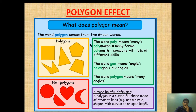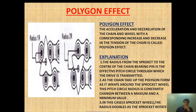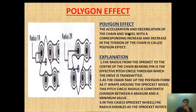So let's begin. What is a polygon? The word polygon means: consider two words — 'poly' means many, 'gon' means angle, so polygon means many angles. The polygon effect is the acceleration and deceleration of the chain and wheel, with a corresponding increase and decrease in the tension of the chain.